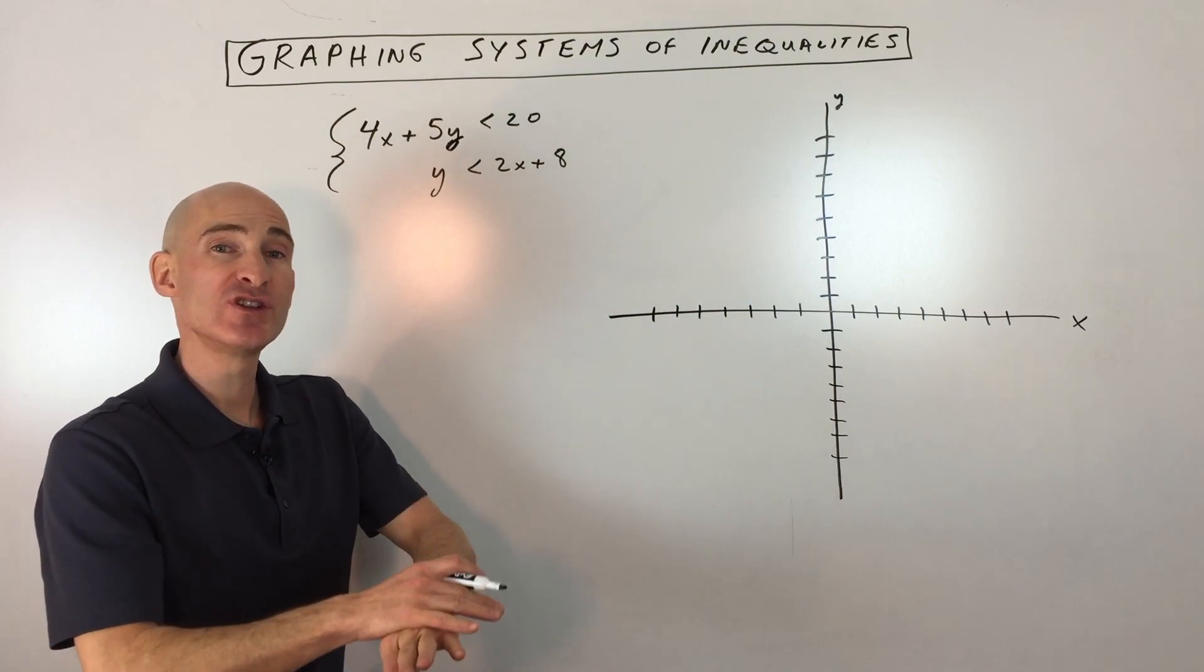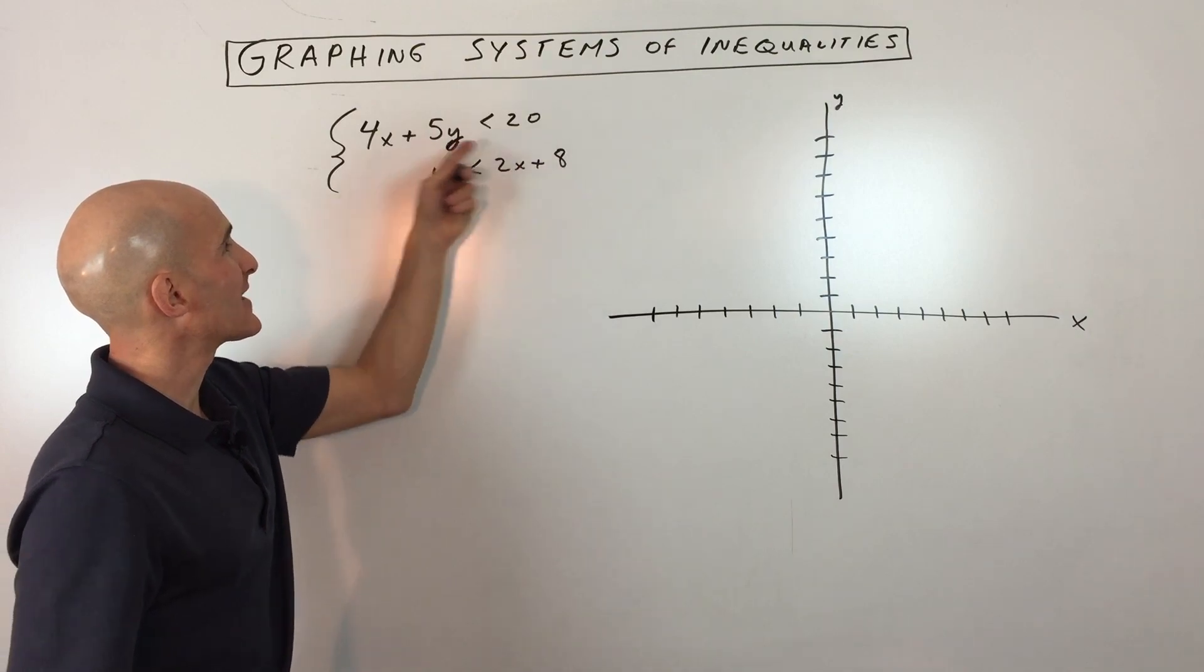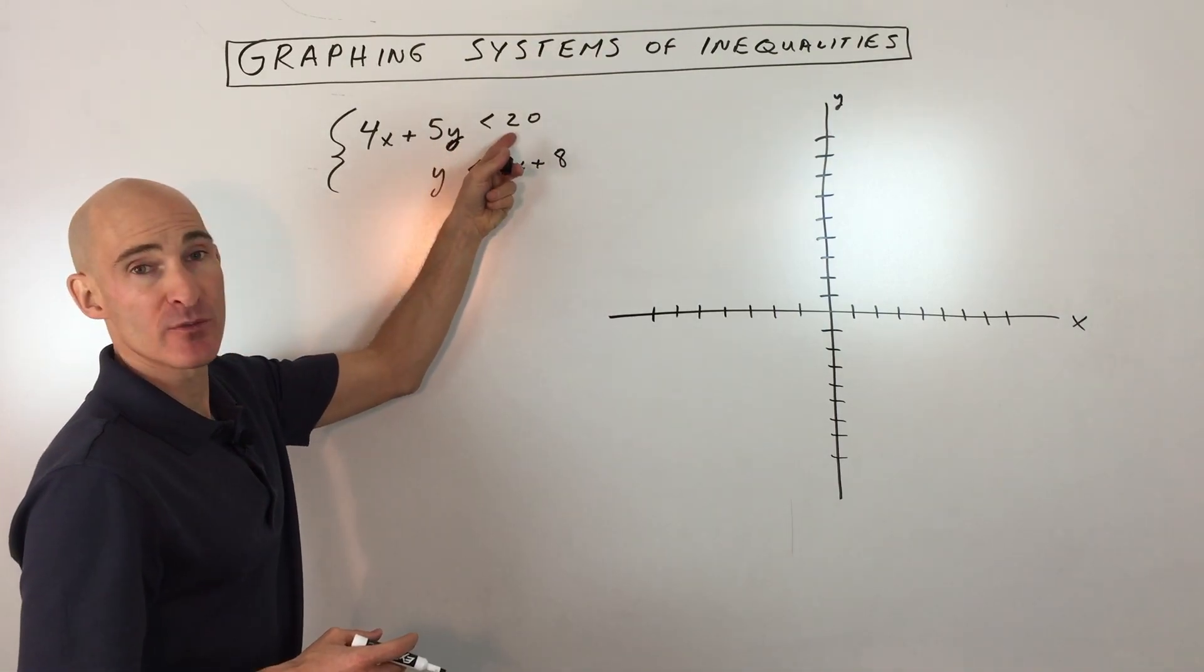Solution set, which is the overlapping region of the two inequalities. The first one you can see is really in a standard type form where the variables are on the left and the numbers on the right.